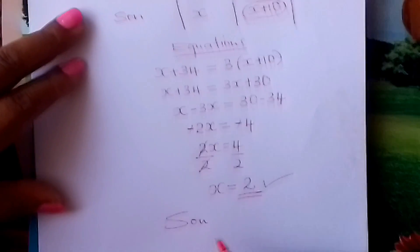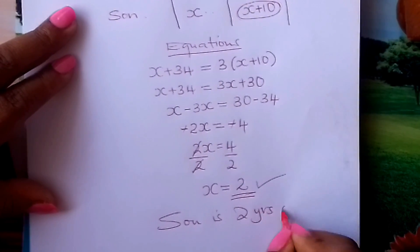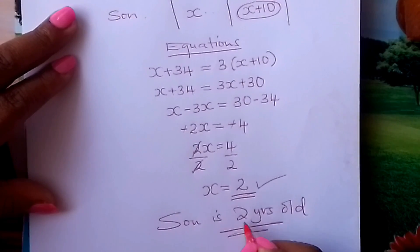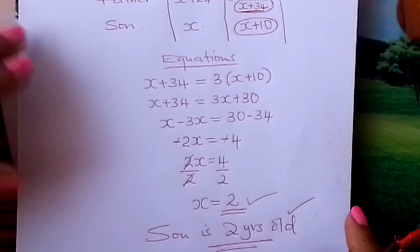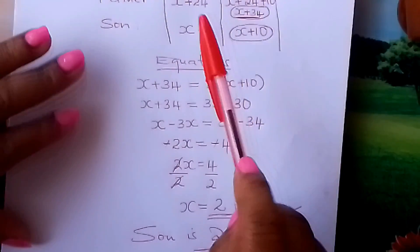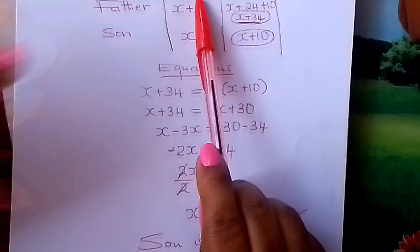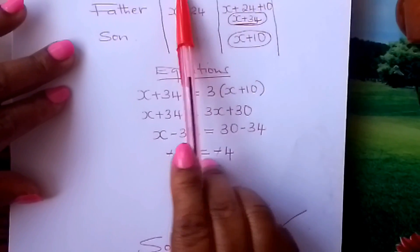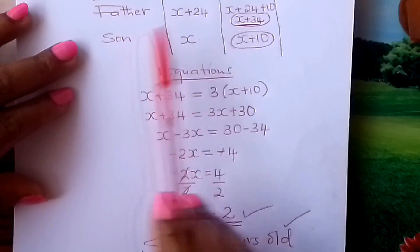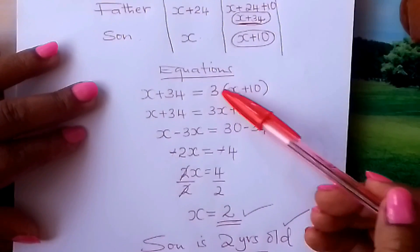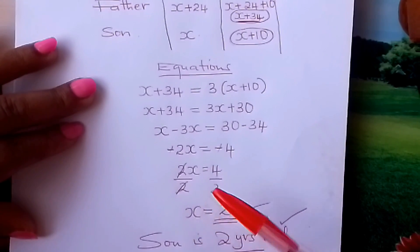You come and conclude: the son is 2 years old today. I hope you have understood, learner. The thing is, you make the right columns. This question is to do with the present and the future, so you make two columns, then add another one for the father and the son. You form the correct equation and solve it accurately to finally get the answer.